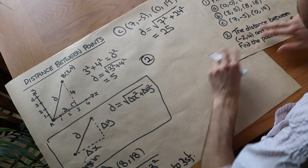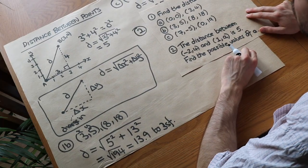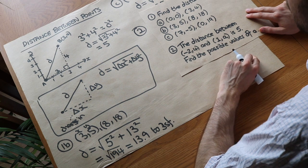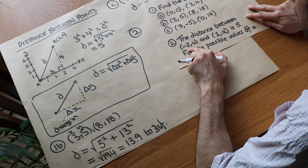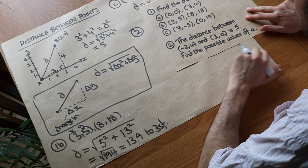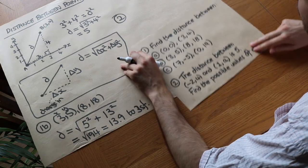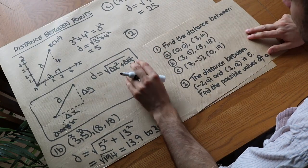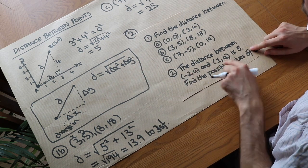Right, let's do this harder one here. And in order to be able to do this question, you need to understand how to solve quadratic equations. So you may want to view that video first before you look at this problem with me. Right, so the distance between minus 2, 4 and 1, a is 5. Find the possible values of a. Now, don't be intimidated by the fact this question is a bit different. We use exactly the same approach.